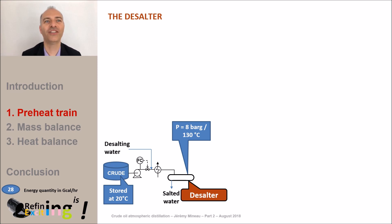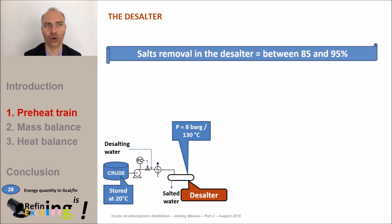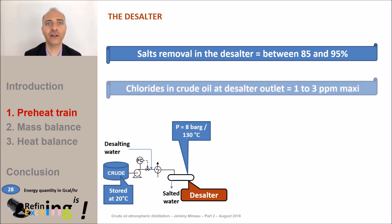In the desalter we have an objective to eliminate about 85 to 95 percent of the salts and thus control the conversion phenomena in the atmospheric column. I remind you that the typical chloride content in the crude varies from 20 to 350 ppm. We expect the chloride content in the crude after the desalter to be between 1 and 3 ppm.